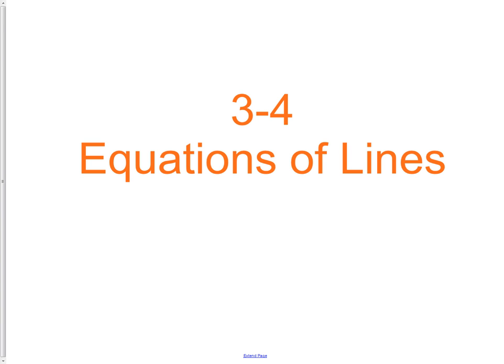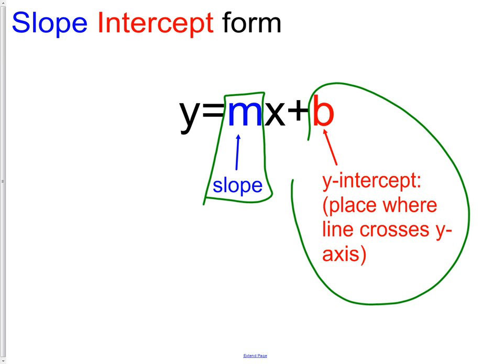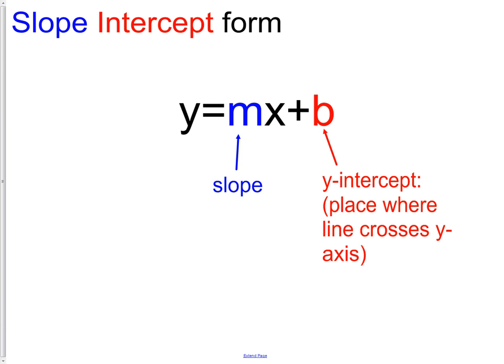Equations of lines have three main forms that they could show up in. The first of these forms is slope-intercept form. Slope-intercept form is exactly what it means — slope is m and b is our y-intercept, giving us y equals mx plus b. Remember, the y-intercept is the spot or location where the line crosses the y-axis.